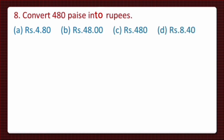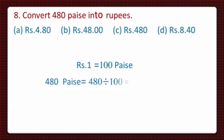So dear students, we know that 1 rupee is equal to 100 paise, and we are given 480 paise which we have to change into rupees. For converting 480 paise into rupees, we have to divide 480 paise by 100, and on dividing we get 4.80 as the answer. So 480 paise is equal to 4.80 rupees, which is given in option A. So let's take option A.